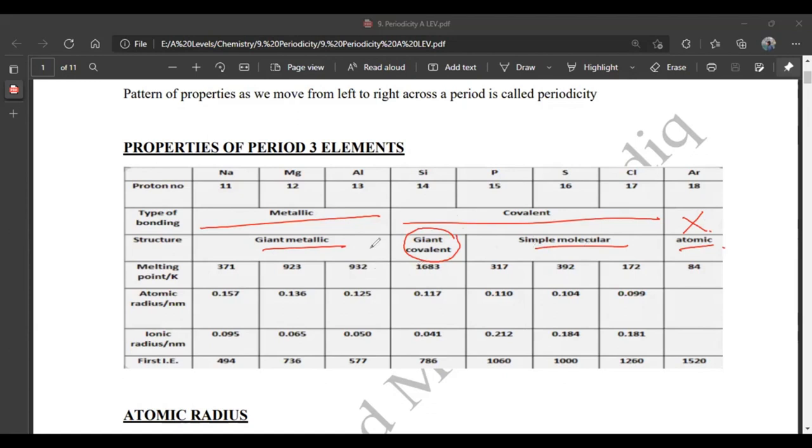And melting points increase from sodium to silicon, with silicon having the highest. Then it decreases. Sodium to aluminum have metallic bonding. Silicon has covalent bonding. And first ionization energy increases across the period.